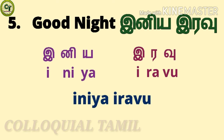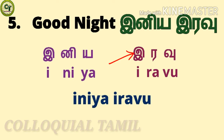To say 'good night,' say iniya iravu. For iniya: 'e' is a short sound vowel, 'knee' is a short sound letter, 'ya' is a short sound letter — together: iniya. For iravu: 'e' is a short sound vowel, 're' is a short sound letter, 'u' is a short sound letter — together: iravu. Iravu means night. One more time: iniya iravu.